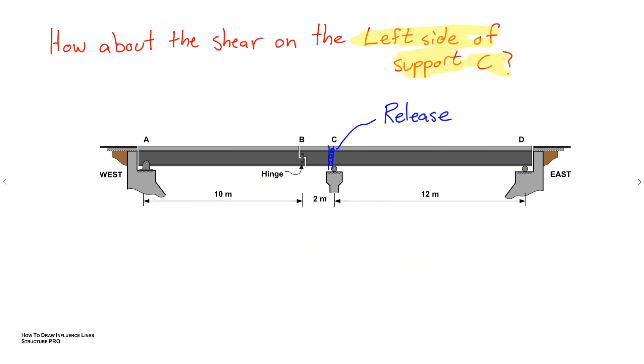Okay, last one. How about the shear on the left side of support C? So we release our structure with this vertical roller. We deform it, a unit value of one. And we notice that since we're talking about the left side of support C, the right side is still subject to the actual support at C. Alright, this is important. So that means that the right side can't move. The left side moves down a value of one.